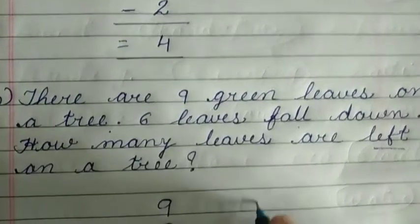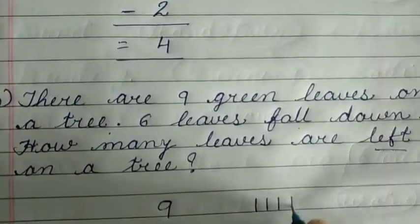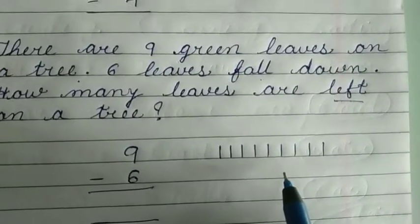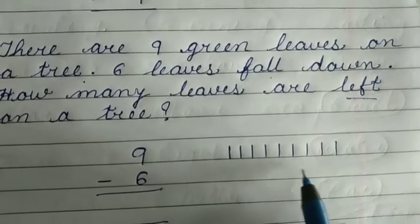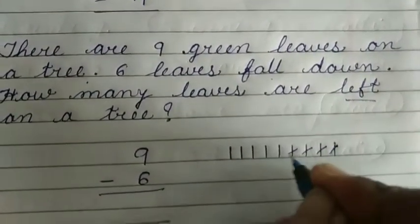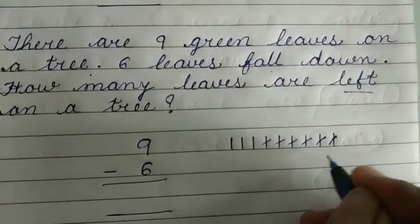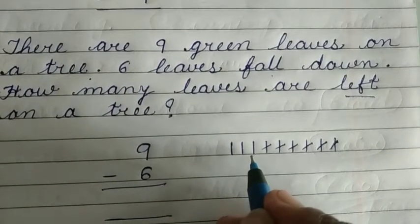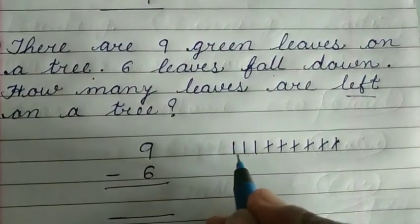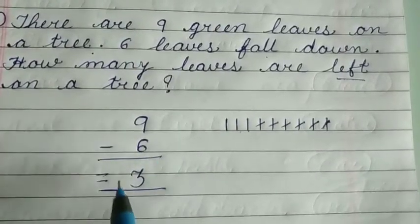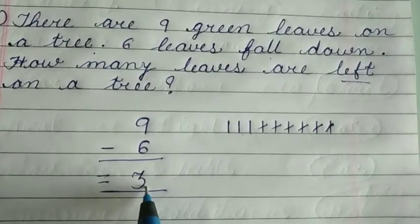Nine leaves on the tree, six fall down. How many leaves remain on the tree? One, two, and three. We can say nine minus six is equal to three. From nine leaves, if six fall down, three are left.